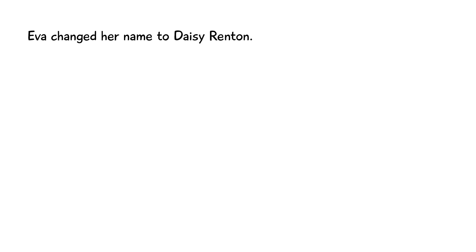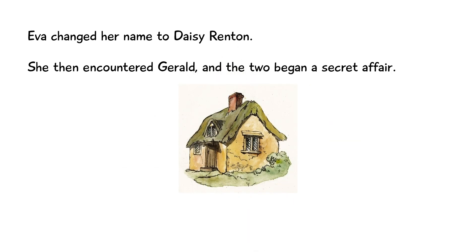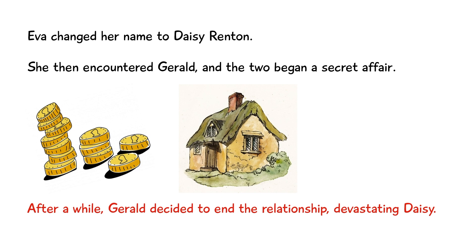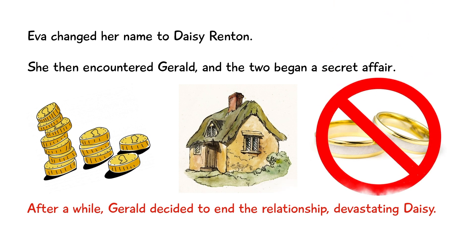The Inspector then explains that Eva decided to change her name to Daisy Renton, most likely to signal a fresh start, and it's under this new name that she encounters Gerald, who had a secret affair with her. He let her stay in a cottage that he was looking after and gave her lots of money. However, after a while Gerald decided to end their relationship, which devastated Daisy, who had strong feelings for him. Sheila had already had her suspicions that Gerald had had an affair because he'd spent a lot of the previous summer away from her, and ultimately as a result of this revelation she decides to give the engagement ring back to Gerald.